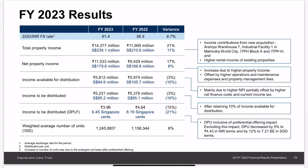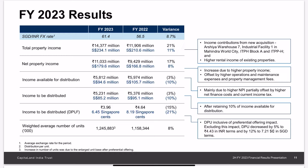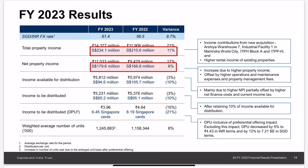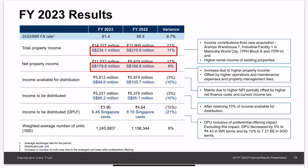Looking at their results for financial year 2023, forex for SGD continued to strengthen 8.7 percent year-over-year, which is definitely not good when the Indian rupee has to be converted back to SGD as dividends. Impressively, if we focus on SGD revenue and NPI, they still increased 11 percent and 8 percent respectively. However, distributable income dropped because of the increase in finance costs, which we will see in their debt profile later.